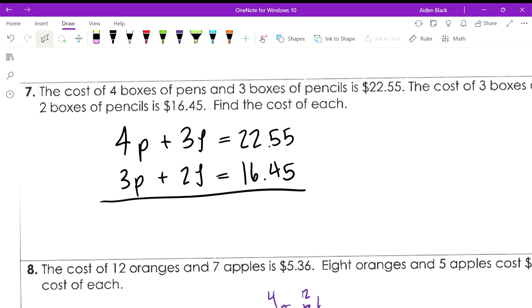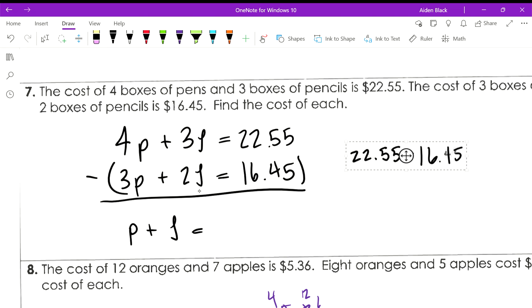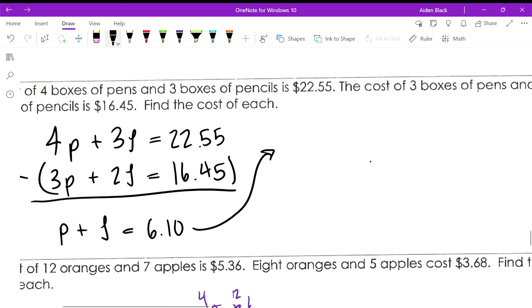Maybe the best way to do this is to subtract the second one from the first one. We get P, we get L equals, and what do we get here? What's the difference between these two? You just type this into your calculator, 6.1. Okay, so this is what we get as another equation.